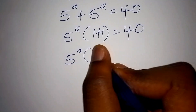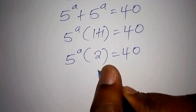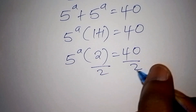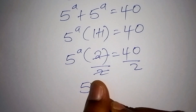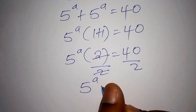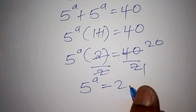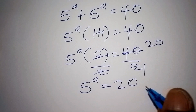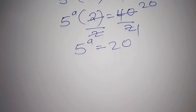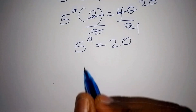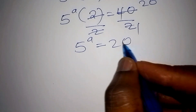So now we have 5 to the power of a times 2 equals 40. The next step is to divide both sides by 2. The 2's cancel, and we remain with 5 to the power of a equals 20. We are still required to find the value of a, since a is not yet isolated.